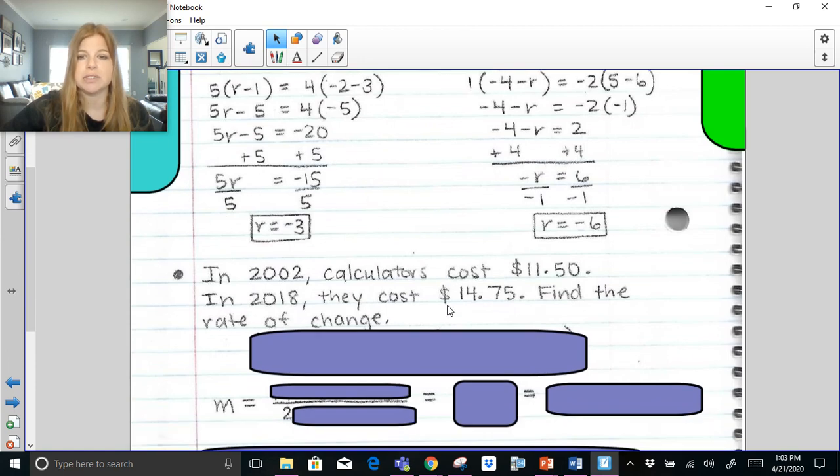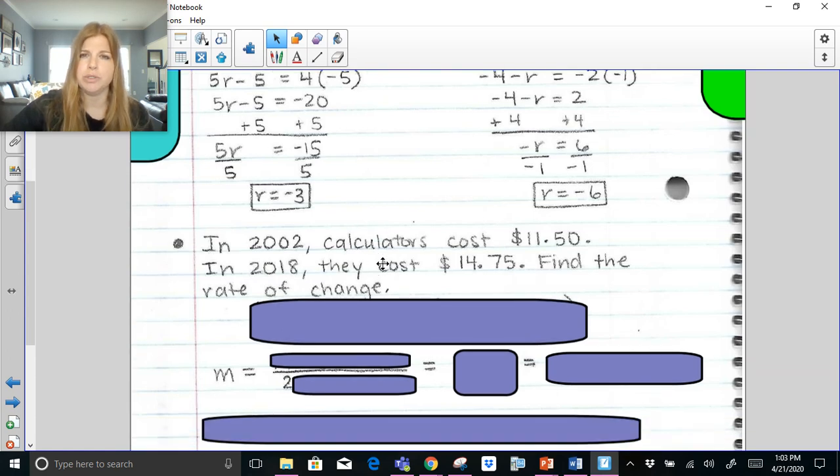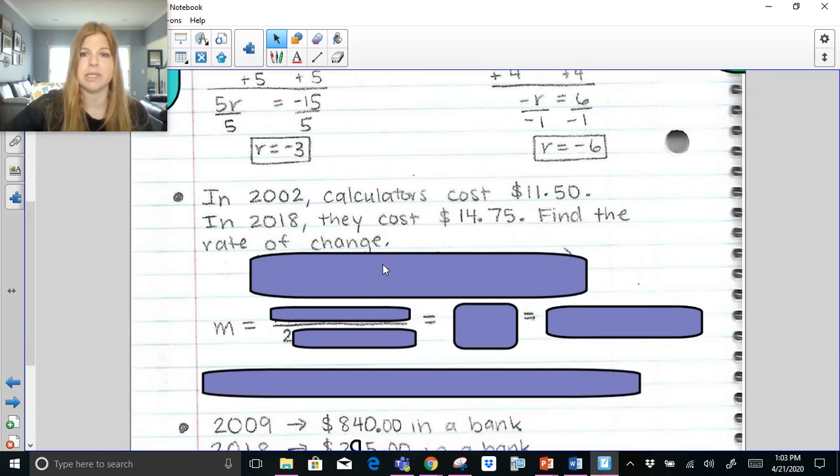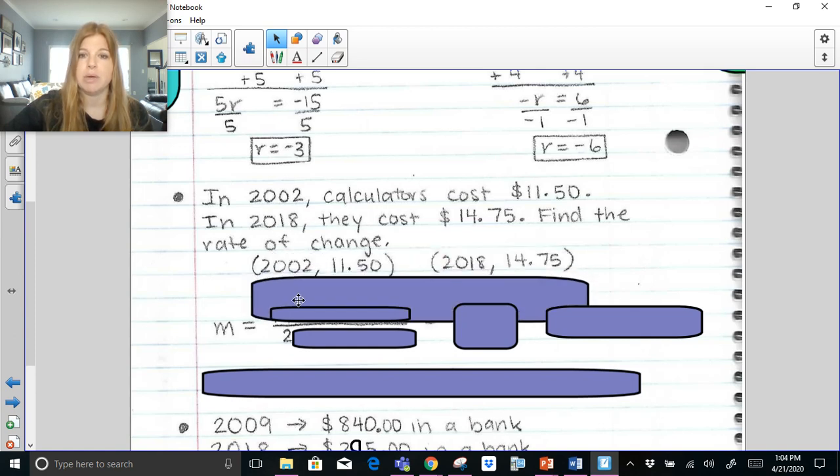In 2002, calculators cost $11.50. In 2018, they cost $14.75. Find the rate of change. When you see rate of change, it really means find the slope. Now it doesn't look like we have ordered pairs here, but we really do. What we have are the ordered pairs of (2002, $11.50) and (2018, $14.75). Time is always your independent.